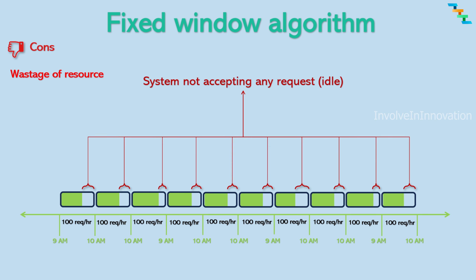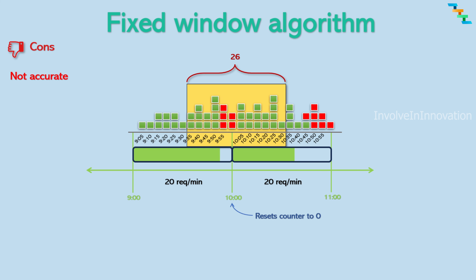The fixed window rate limit algorithm is also not accurate because the limit resets at every window boundary. This leads to an inaccurate effective request rate. For example, the number of requests accepted during the range 9 minutes 30 seconds to 10 minutes 30 seconds can be 26, because it does not account for the number of requests accepted in the previous window.